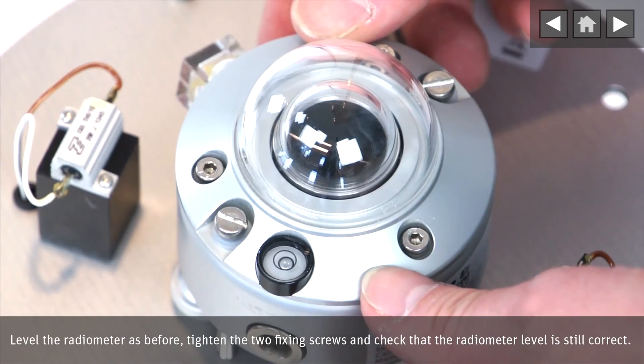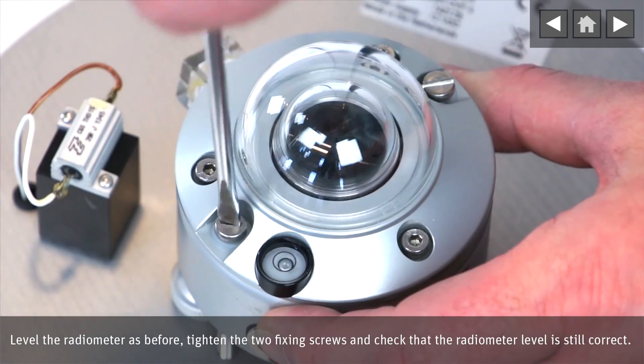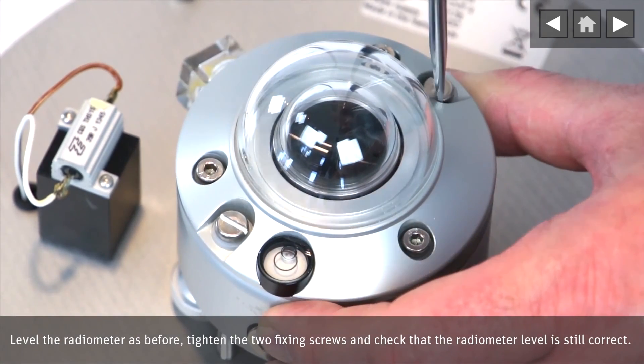Level the radiometer as before, tighten the two fixing screws and check that the radiometer level is still correct.